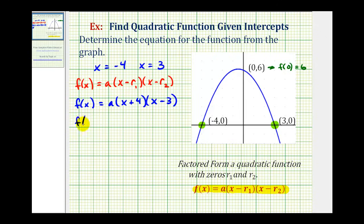So if we substitute zero for x, this function value must be six. So that means zero plus four is four, and zero minus three is negative three, but this must equal the function value of positive six, and now we can solve for a.